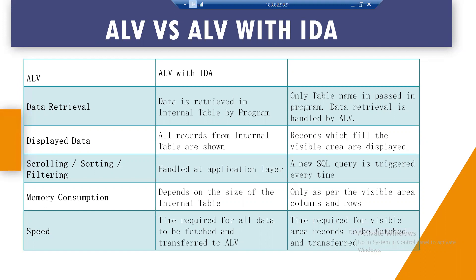Regarding scrolling, sorting, and filtering: in normal ALV, these operations are done at the application layer. But in ALV IDA, for all these activities, a SQL query is triggered. If you want to filter, a query is sent to the database which takes care of filtration. If you want to sort, a query is generated and sent to the database. In normal ALV, the sort logic executes at the application layer.